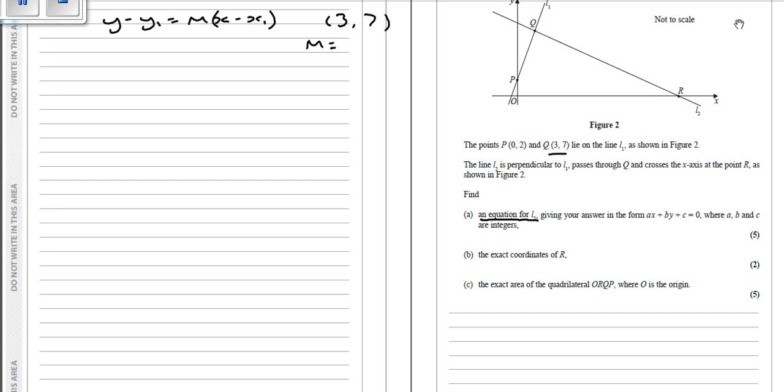However, what we don't have is the gradient. But we do know that p is 0, 2, and we know that q is 3, 7. And we also know that these lines are perpendicular. So if those two lines are perpendicular, if we know the gradient of this line, we can find the perpendicular gradient for L2.